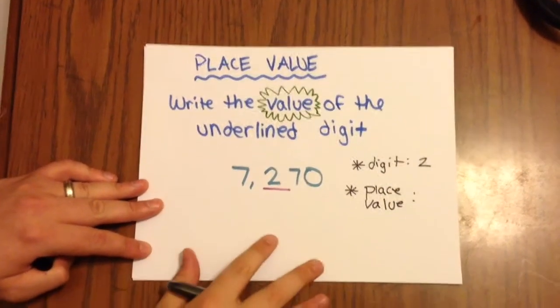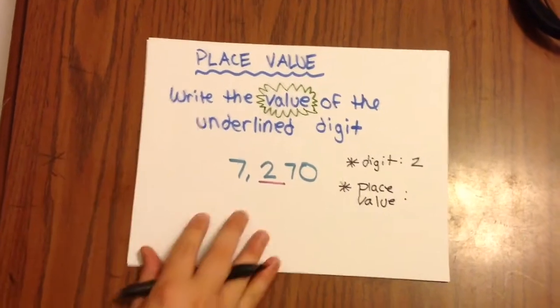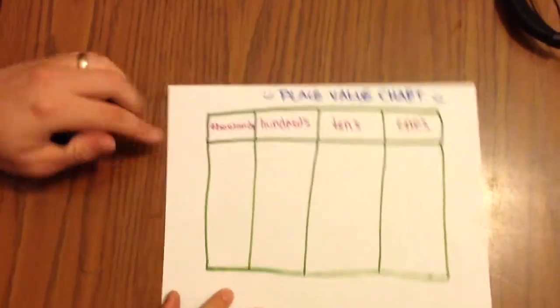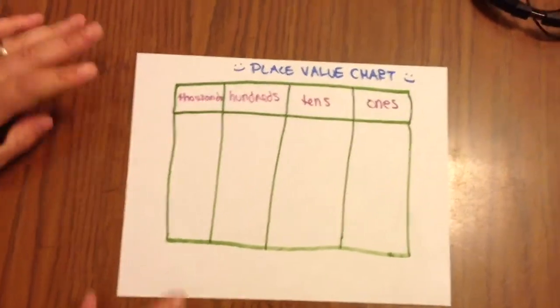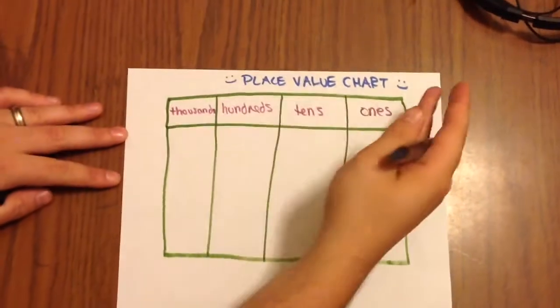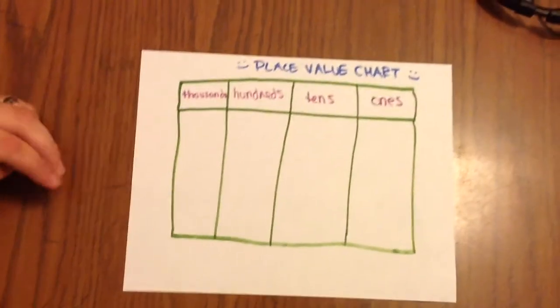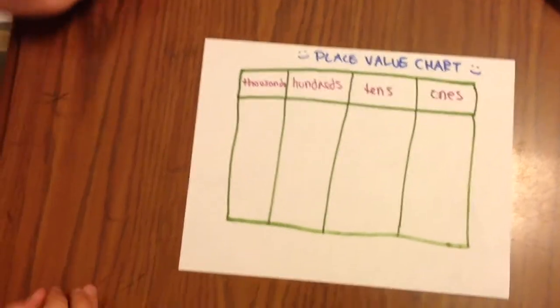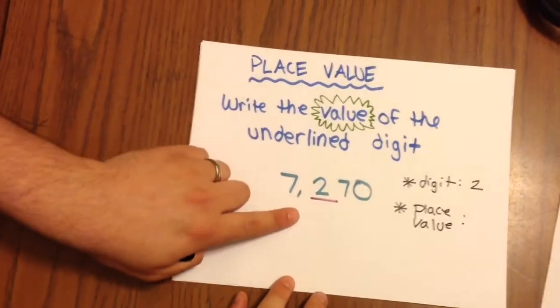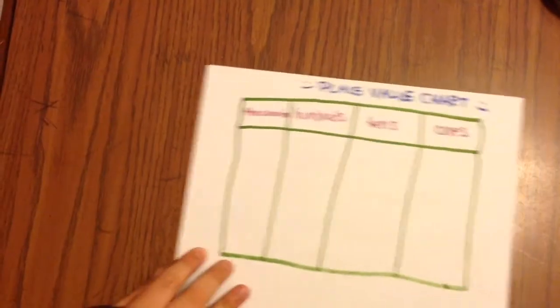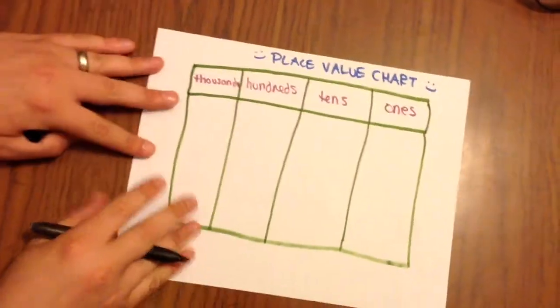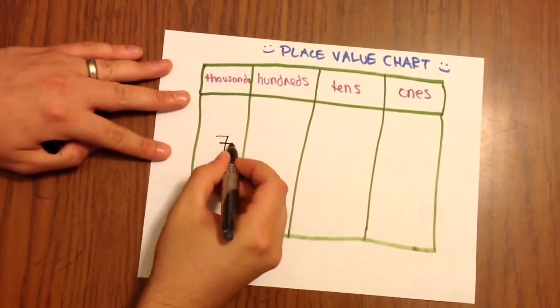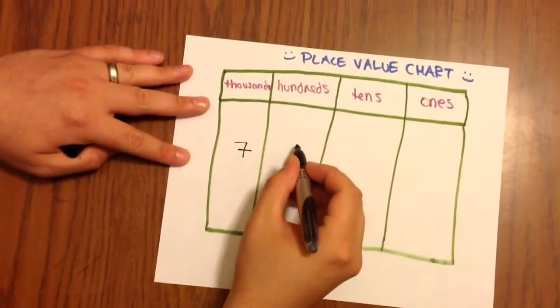So a really helpful tool to use in these types of problems is actually a place value chart. And you'll notice I made my own place value chart here. It's not too fancy. The lines are nowhere near straight. But it's a happy place value chart. So what I can do is I can go ahead and take our number 7,270 and write it right onto our place value chart. So I'm going to start with the first digit to the left, which is our 7, and I'm going to place it in the thousands place and just go down the line.